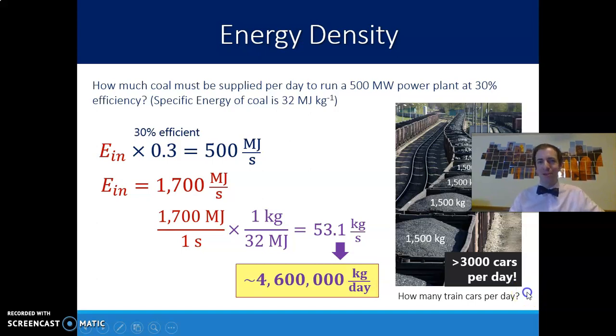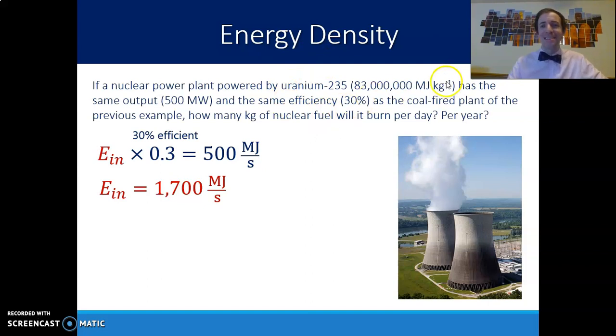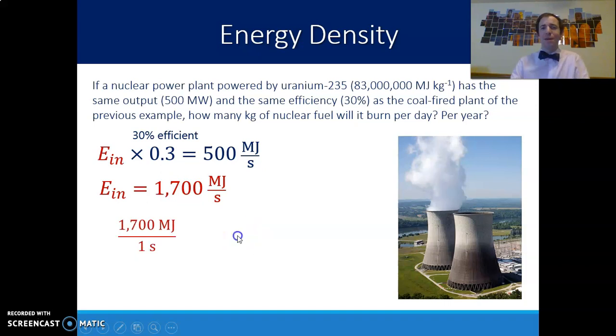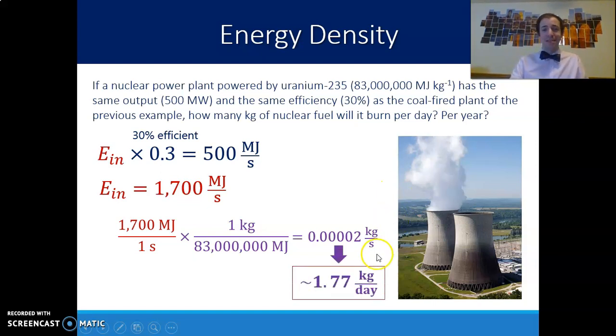If we look instead at something that is far more energy dense, let's look at uranium. Uranium has an energy density of 83 million megajoules per kilogram. Let's say we're talking about the same power output for our particular power plant, and we want this power plant to produce 500 megawatts a second. Working backwards, if it's 30% efficient, means I need an energy in of 1,700 megajoules a second. If I take this as my conversion factor, I can figure out what that means in terms of kilograms. I'm dividing by 83 million. You already know this is going to be a lot smaller. Kilograms per second, we're talking 0.00002 kilograms a second. That feels like a really tiny number, so let's scale that up a little bit so we have a better understanding of what that means in a larger timescale. That many kilograms a second means it's 1.77 kilograms per day or something like 646 kilograms a year.